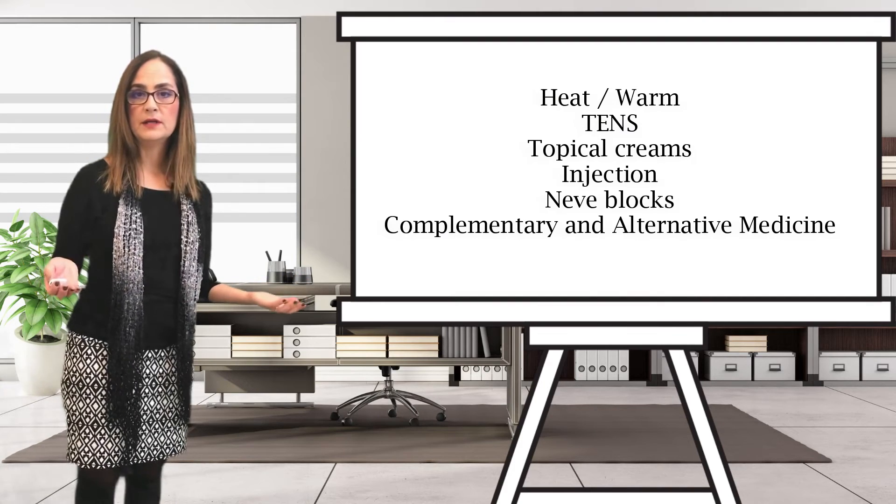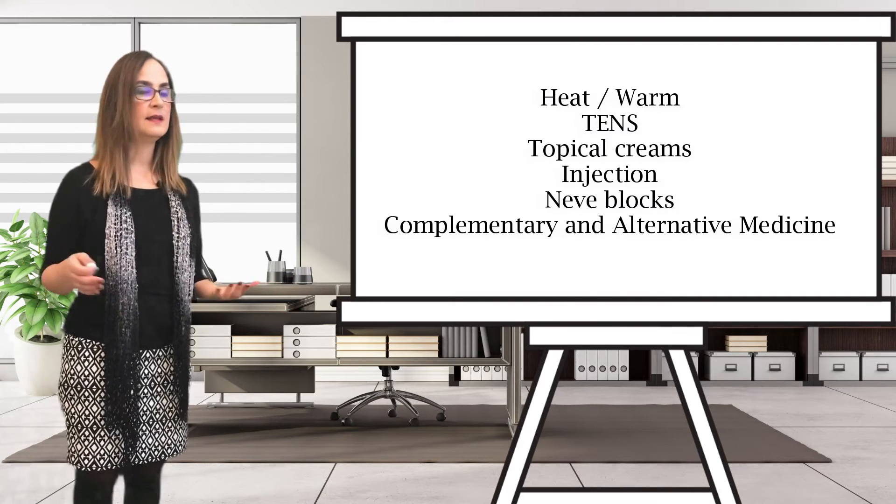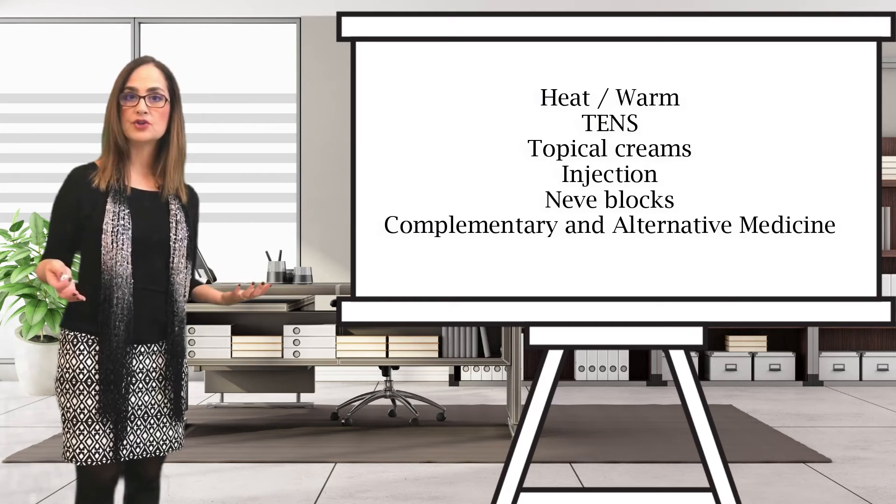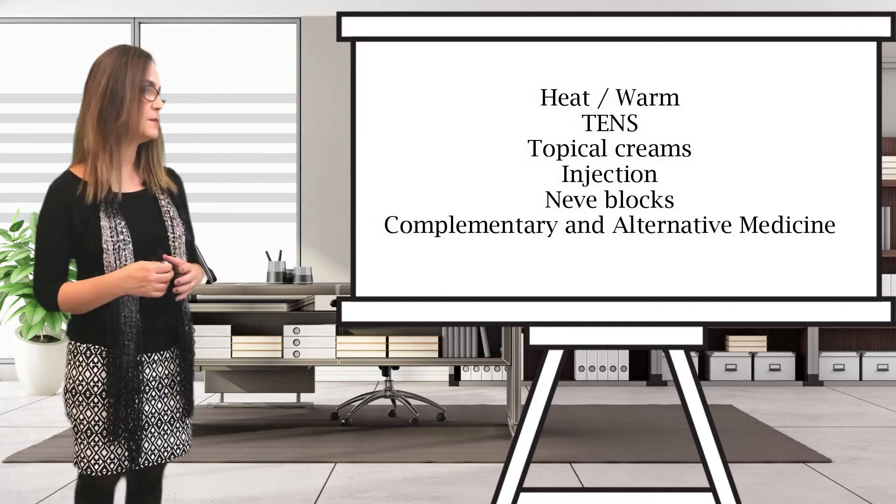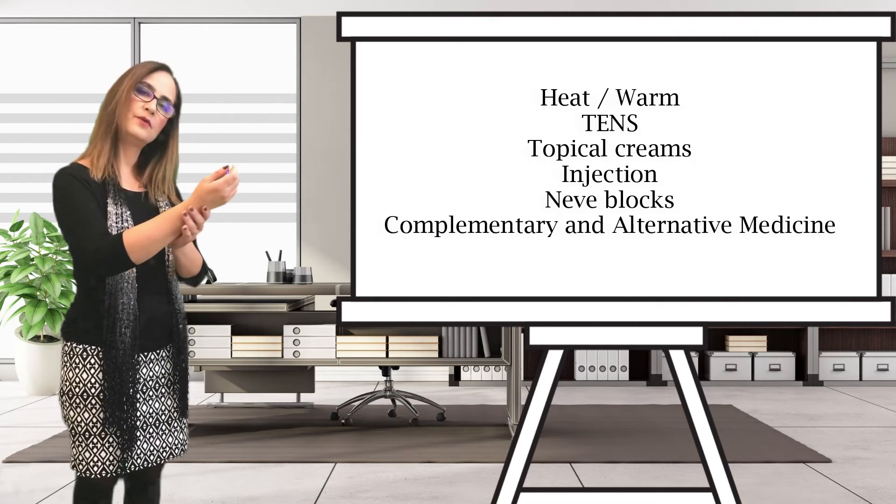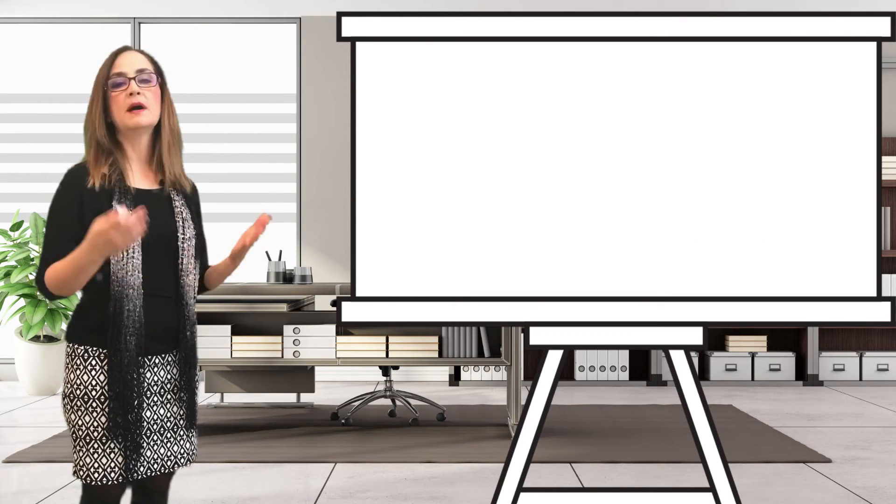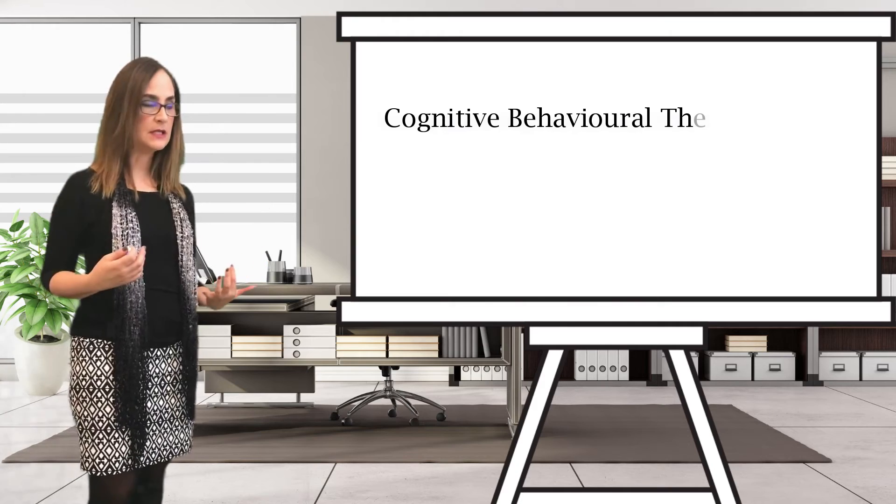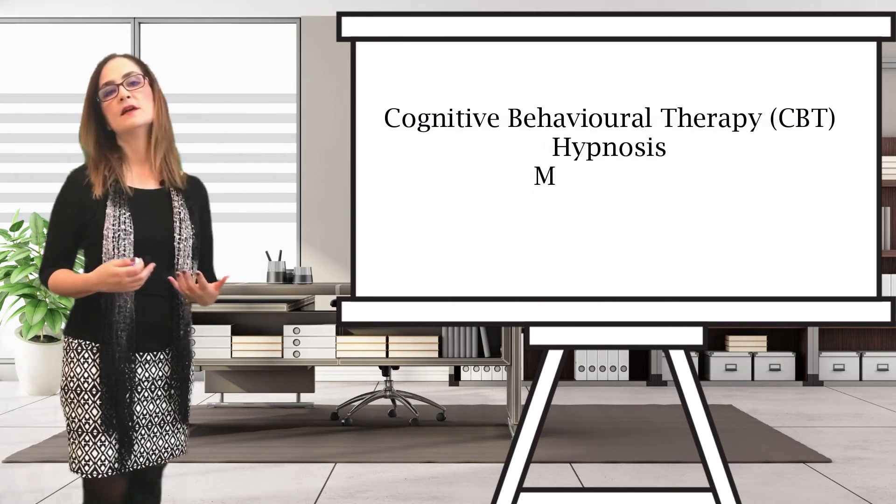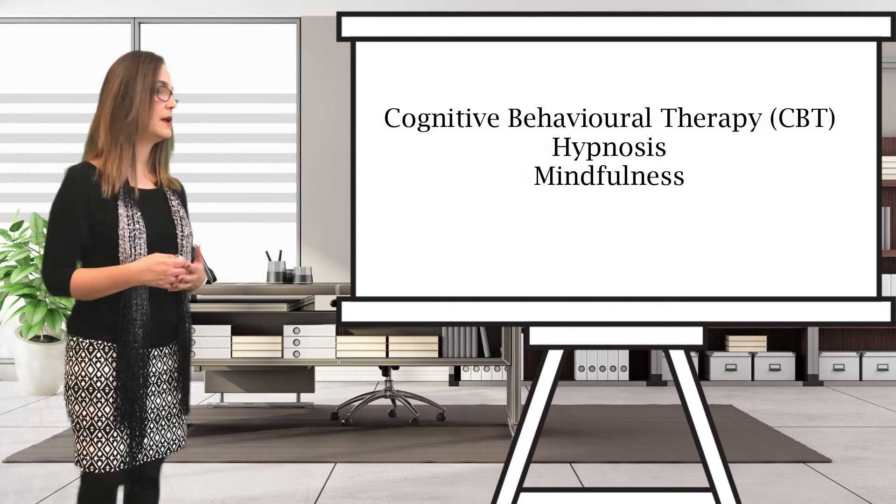And also complementary and alternative medicine, things like acupuncture, manipulation. They work well for some types of neuropathic pain, especially peripheral nerves like carpal tunnel syndrome. Other things are mind-body therapy like CBT, hypnosis, mindfulness. Those things are very helpful.